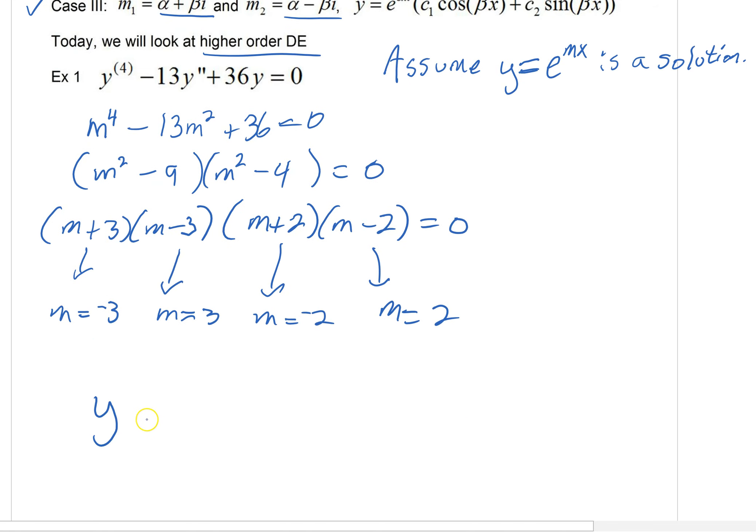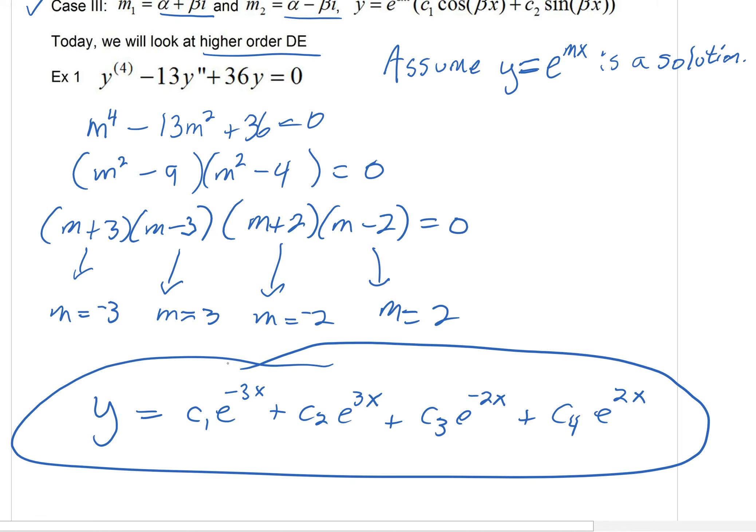And then what would our solution look like? Well, we'd say we've got some constant, e to the negative 3x, a different constant, e to the positive 3x, here's a third constant, e to the negative 2x, finally here's our fourth constant, e to the positive 2x. Of course you could have had these in any order, but look at what we're able to do very quickly now. At the end of the day, when you have a linear, homogeneous differential equation with constant coefficients, we assume y equals e to the mx is a solution, we'll really wind up with polynomials. We had quadratics on our first day. Now we're seeing that things could get a little bit higher, and that's okay. We could have a fourth degree polynomial. We could have higher powers. We'll factor, and we'll solve, and we'll be in good shape.